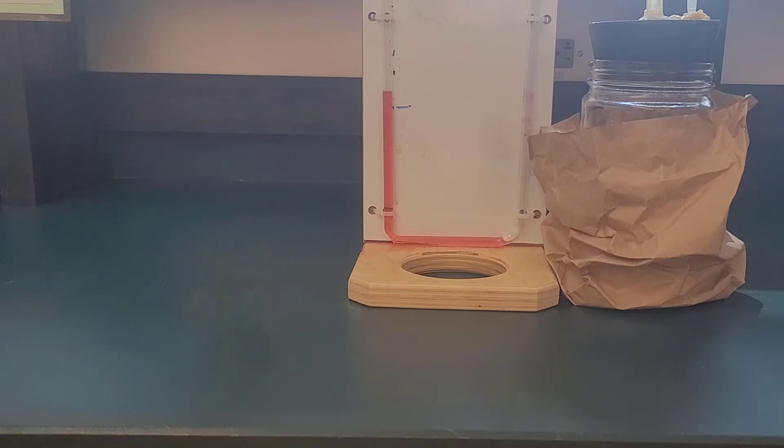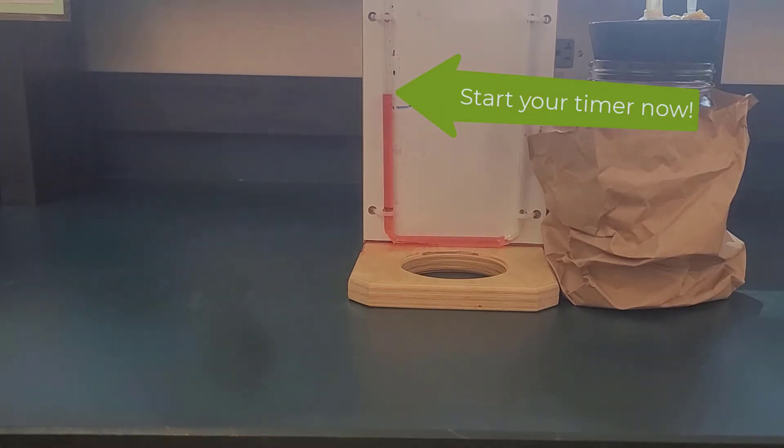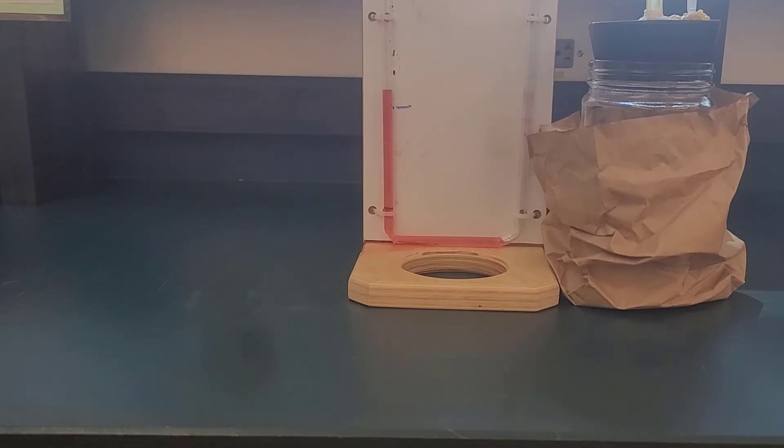Inject the air with a syringe, and you start your timer now. Same thing, you're going to wait and time in seconds how long it takes for the fluid level to drop back to the line we marked.